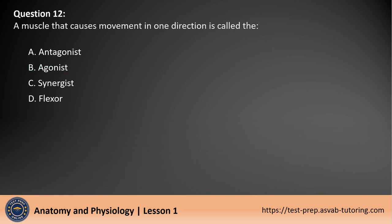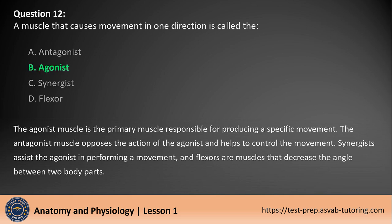Question 12. A muscle that causes movement in one direction is called the: A. Antagonist. B. Agonist. C. Synergist. D. Flexor. The answer is B. The agonist muscle is the primary muscle responsible for producing a specific movement. The antagonist muscle opposes the action of the agonist and helps to control the movement. Synergists assist the agonist in performing a movement, and flexors are muscles that decrease the angle between two body parts.